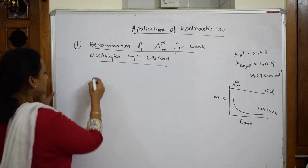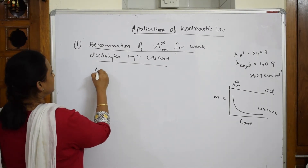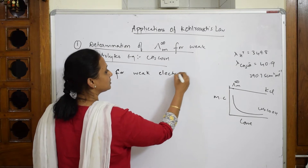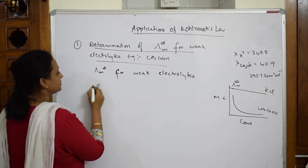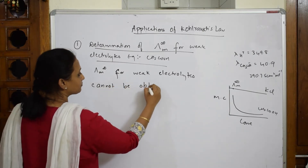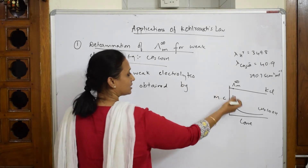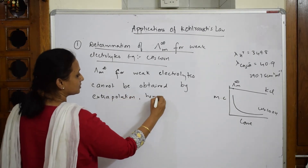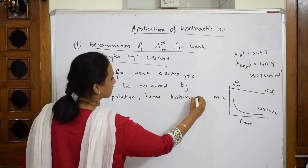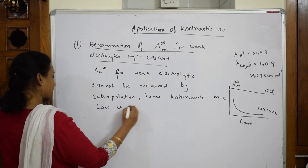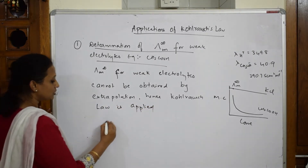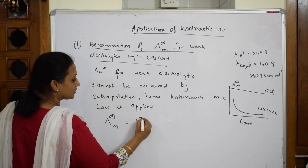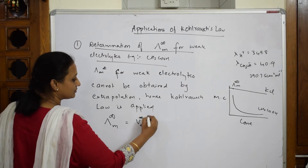For weak electrolytes, λ_m at infinite dilution cannot be obtained by extrapolation. Hence, Kohlrausch law is applied. According to Kohlrausch law, λ_m at infinite dilution equals the number of cations multiplied by their molar conductivity at infinite dilution, plus the number of anions multiplied by their molar conductivity at infinite dilution.